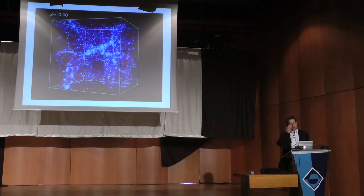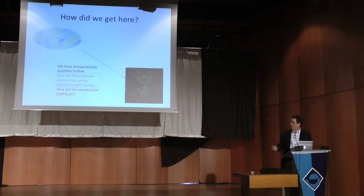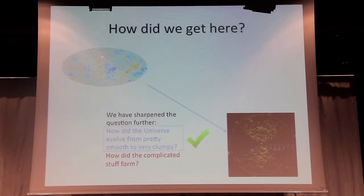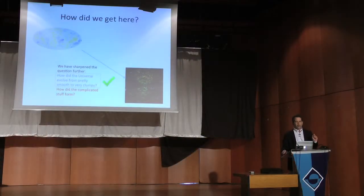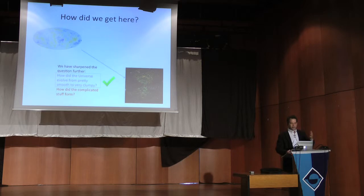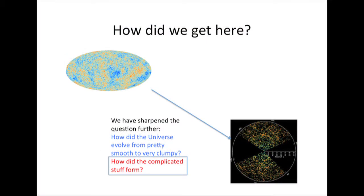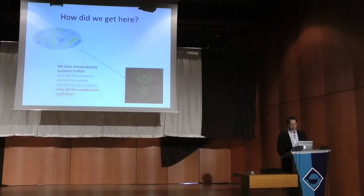That's the answer. One of the great things about science is we can pose difficult questions in a quantitative way and get the answer. You start with small inhomogeneities and they grow via gravity to be very large structures such as galaxies. That answers the first part of our cosmic question — how did the universe go from very smooth to very clumpy? The second part was: how did the complicated stuff form? Early on there were only electrons and protons, so how did we come to form tables, chairs, people, and stars?